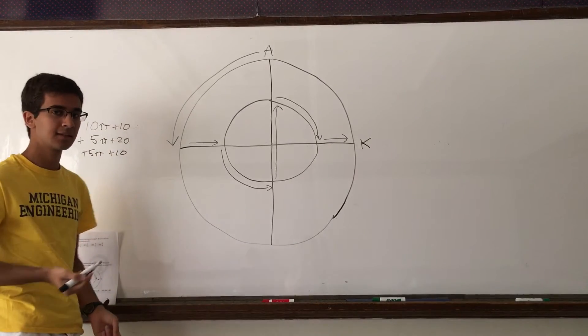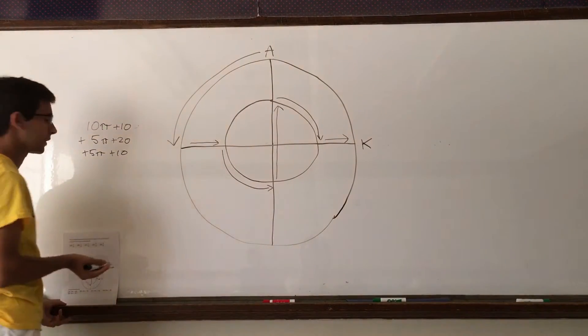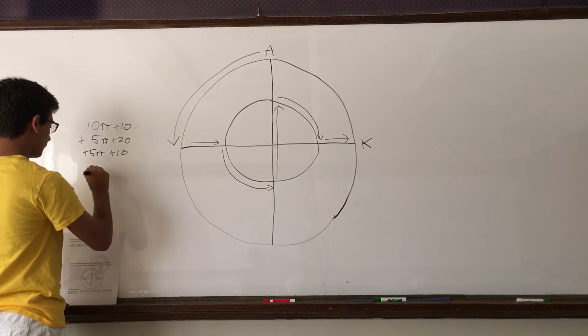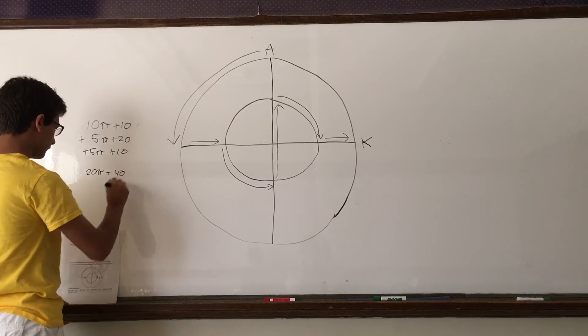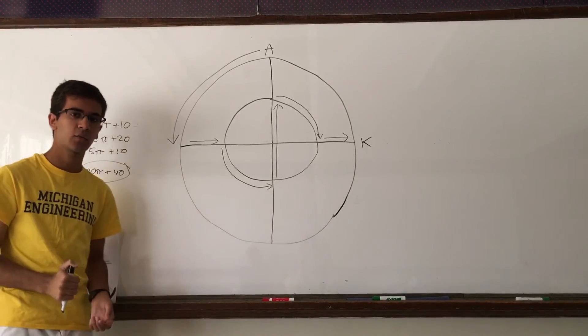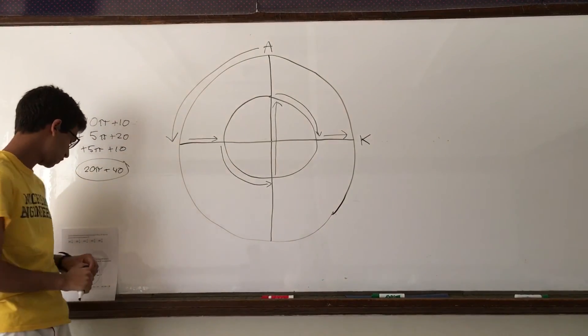If we add all these distances up, we get the total distance in meters that the aardvark traveled. So the total distance is 20π plus 40 meters, which is choice E.